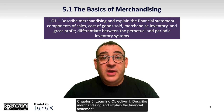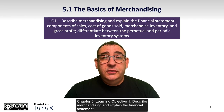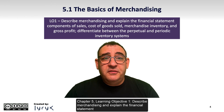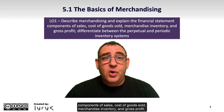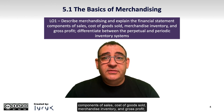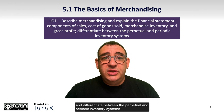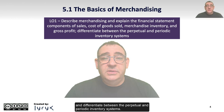Chapter 5, Learning Objective 1. Describe merchandising and explain the financial statement components of sales, cost of goods sold, merchandise inventory and gross profit, and differentiate between their perpetual and periodic inventory systems.